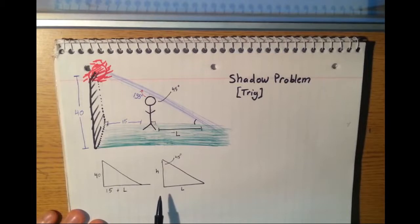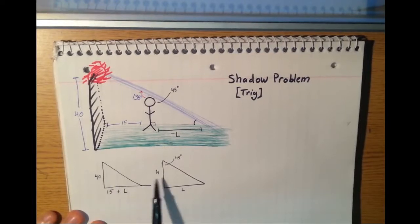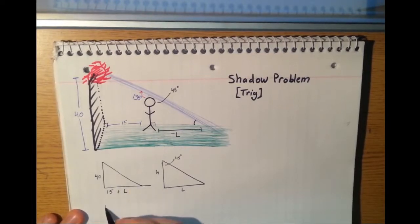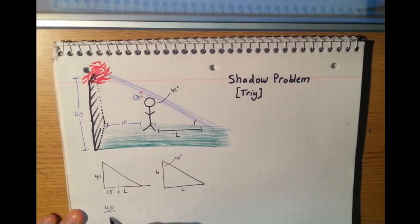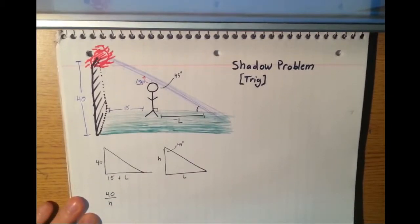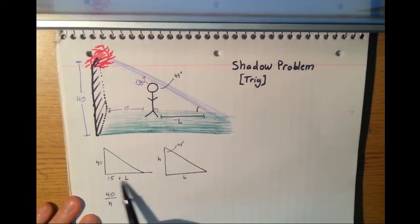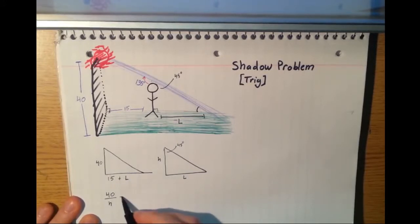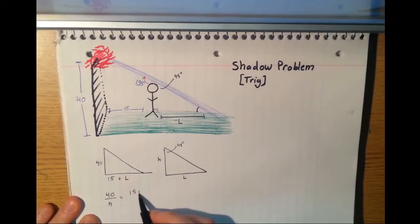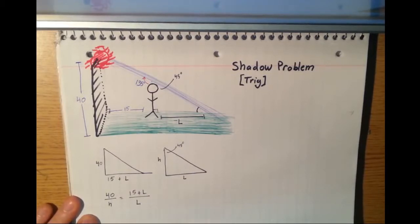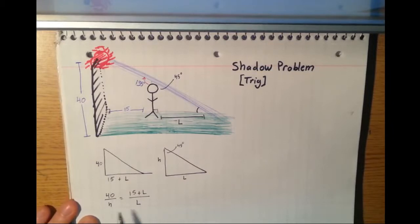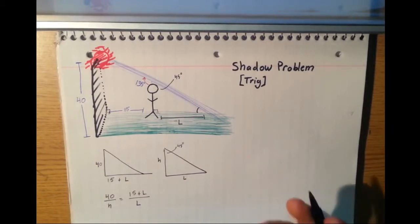Since the sides are proportional, we can say that 40 over H is equal to this right here, 15 plus L over L. Okay. Well, we have one relationship. We have one equation with two unknowns. But we've got to figure out something else to solve this.